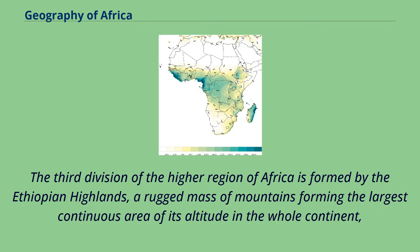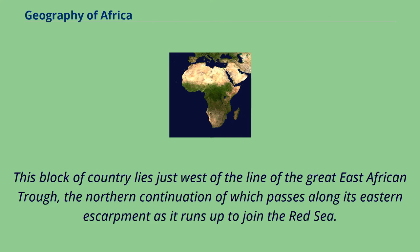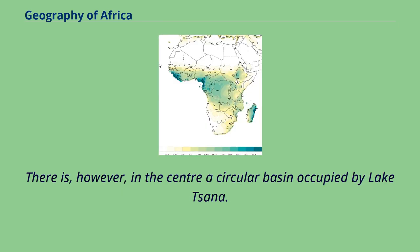The third division of the higher region of Africa is formed by the Ethiopian Highlands, a rugged mass of mountains forming the largest continuous area of its altitude in the whole continent. Little of its surface falls below 1,500 meters, while the summits reach heights of 4,400 to 4,550 meters. This block of country lies just west of the line of the Great East African Trough, the northern continuation of which passes along its eastern escarpment as it runs up to join the Red Sea. In the center is a circular basin occupied by Lake Tana.